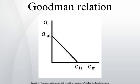Mathematical Description: The Goodman relation can be represented mathematically, where σ_a is the alternating stress, σ_m is the mean stress, σ_e is the fatigue limit for completely reversed loading, and σ_u is the ultimate tensile strength of the material. The general trend given by the Goodman relation is one of decreasing fatigue life with increasing mean stress for a given level of alternating stress.